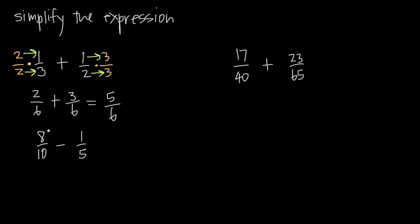Let's do another example. We have 8 over 10 minus 1 over 5. I want to find a common denominator. These are pretty small numbers, so I'm going to use the lowest common multiple technique from the first example — looking for the larger of the two numbers. So 10 and 5: 10 is larger, so I'm going to focus on 10. I want to look at the multiples of 10, starting with 10 times 1, which gives me 10. 5 also goes into 10 evenly — 5 goes into 10 two times. So I just have to multiply this fraction by 2 over 2.